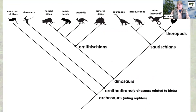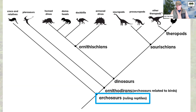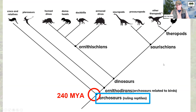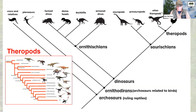We call crocodilians reptiles but we call birds birds, when in reality birds either should be reptiles or crocodilians should be birds. We're going to dive into this area with crocodilians and birds to better understand the origin of birds. The group that includes crocodilians and birds are all called the archosaurs, or the ruling reptiles. The archosaurs evolved about 240 million years ago, and include crocodilians, pterosaurs, pterodactyls, horned dinosaurs like Triceratops, armored ones like Stegosaurus, the long-neck sauropods, and the theropod dinosaurs, which includes birds and things like Tyrannosaurus.